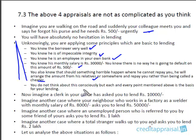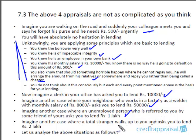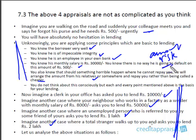Now imagine a second scenario where a clerk in your office has asked you for 10,000. Another case where a neighbor working in a factory has asked for 50,000 — his monthly salary is just 10,000. Another person who is unemployed, referred to you by a friend, is asking for 1 lakh. And a total stranger walks up and asks you to lend 2 lakhs. These are five different scenarios differing not just in amount, but also in the level of risk involved.